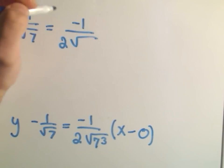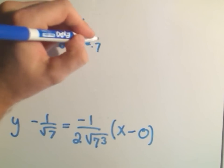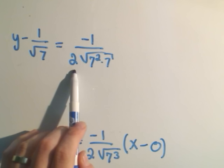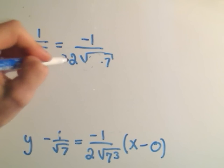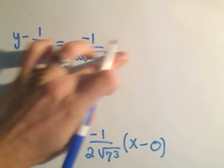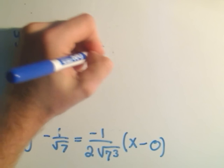You could write 7 cubed as 7 squared times 7. But remember, if you have something squared underneath a square root, you can pull it out once. So I can actually pull that 7 out one time. And then I'm going to have 7 times 2, which is 14. Why did I write 12? We'll have 14 root 7.